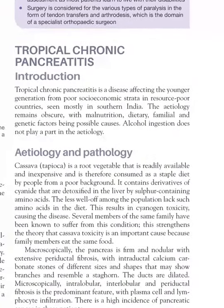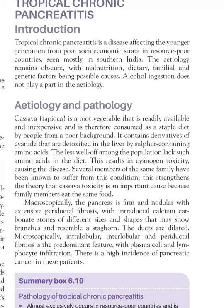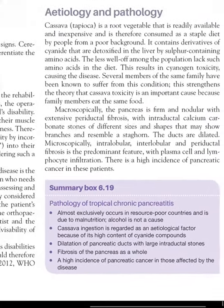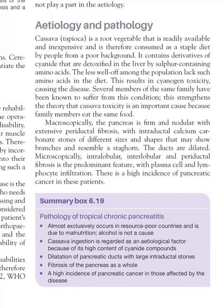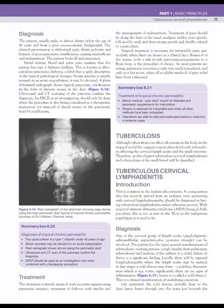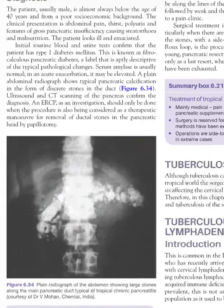An important tropical disease is tropical chronic pancreatitis, which mainly affects people of low socioeconomic status. It is thought that consumption of cassava — a root vegetable containing cyanide — when not properly detoxified, leads to this condition. It causes dilation of pancreatic ducts with large intraductal stones and fibrosis of the pancreas. It also causes diabetes, termed fibrocalculous pancreatic diabetes.